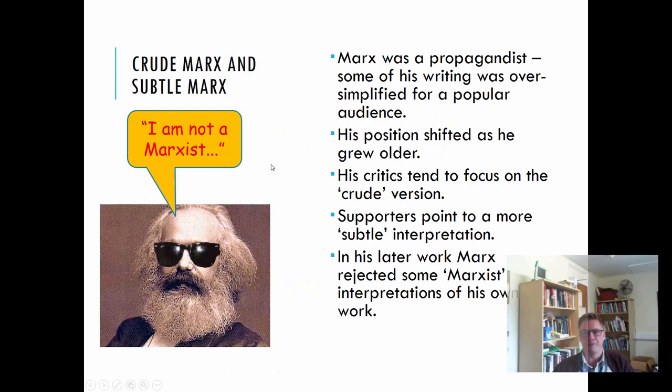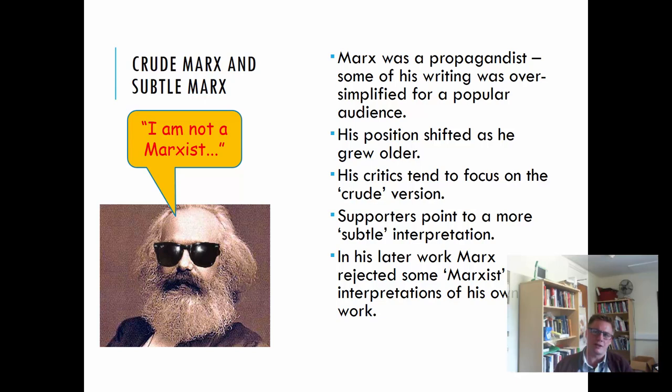We need to be careful, however, because that's quite a crude interpretation of Marx's work. Although some of his earlier work does say those kinds of things, he got more sophisticated over time. The Communist Manifesto is a political manifesto — it's there to stir up things, to cause trouble, to drive forward revolutions. 1847–1848 in particular were known as the year of revolutions, and there were revolutions in several European countries. Marx was a propagandist; some of his writings were oversimplified and intended for a popular rather than academic audience.